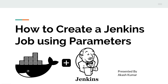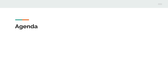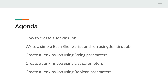Hello everyone, this is Akash here and welcome to my channel. In this video I'm going to talk about how you can create a Jenkins job using parameters. There are multiple ways we can create jobs in Jenkins: we have list parameters, string parameters, and boolean parameters. The agenda is: how to create a Jenkins job, how to create a simple bash shell script and run it in Jenkins, then string parameters, list parameters, and boolean parameters.